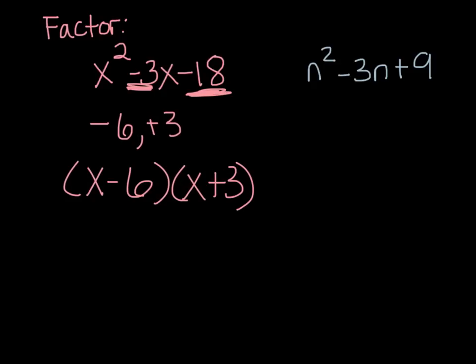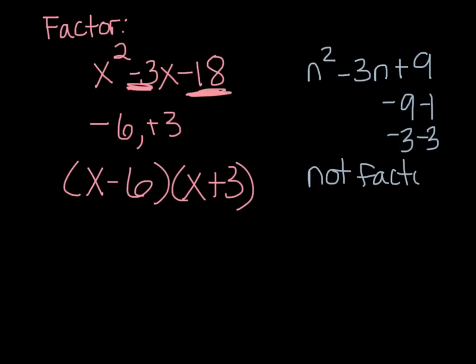Here's another one: n squared minus 3n plus 9. What factors of 9 add to get negative 3? The factors of 9 are 9 and 1 — that makes 10; negative 9 and negative 1 makes negative 10; 3 and 3 makes 6; negative 3 and negative 3 makes negative 6. Those are the only factors 9 has. Since no factors of c add to get b, this is not factorable — and that is what you would write as your answer.